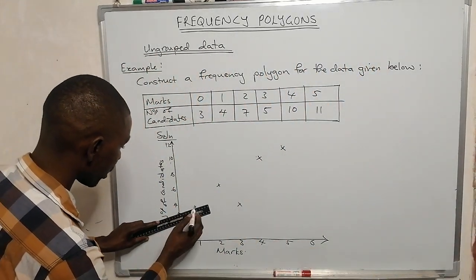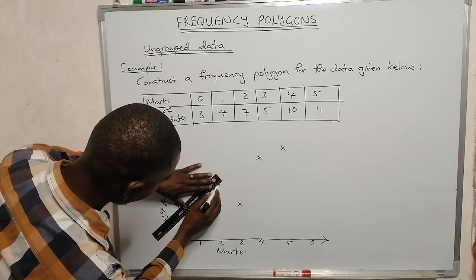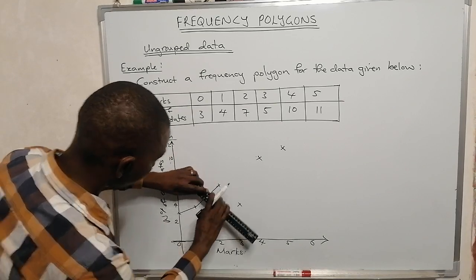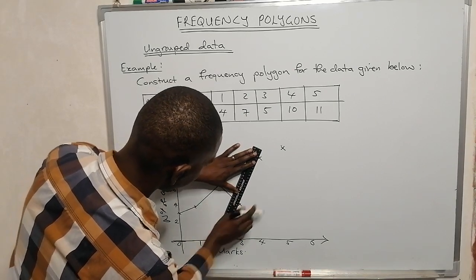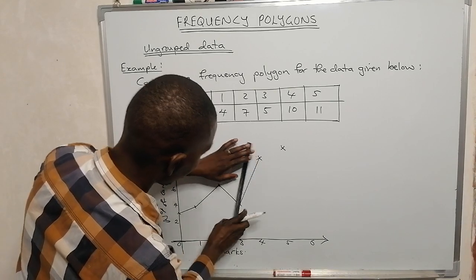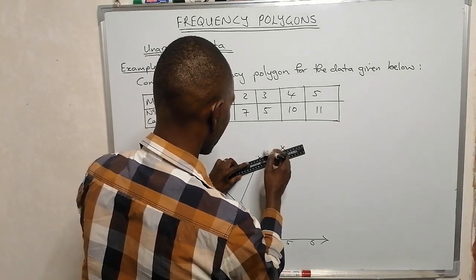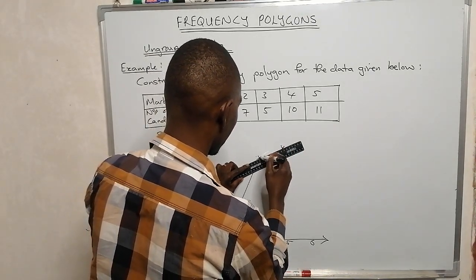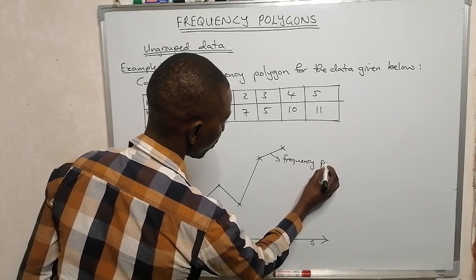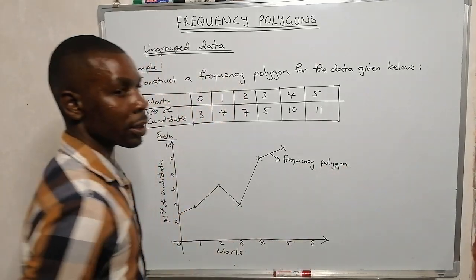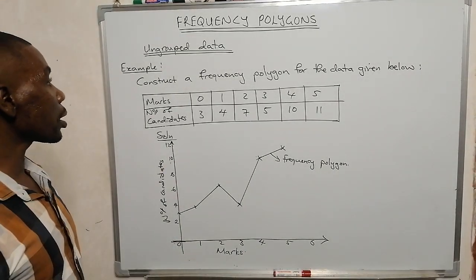Now we use a ruler to join these points. We join point to point in sequence — joining each consecutive pair — until we connect the last point. This is our frequency polygon for the ungrouped data. Now let's look at a frequency polygon from grouped data.